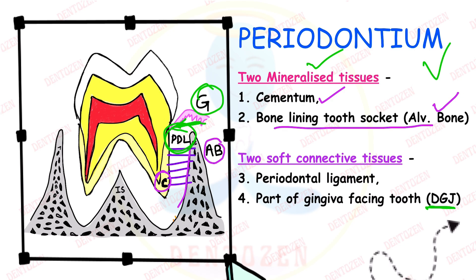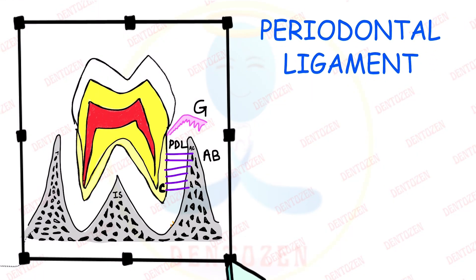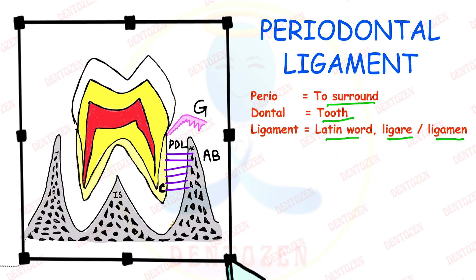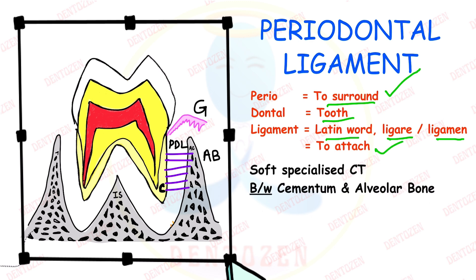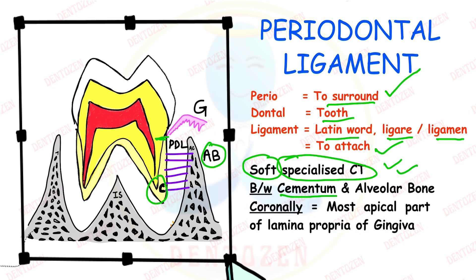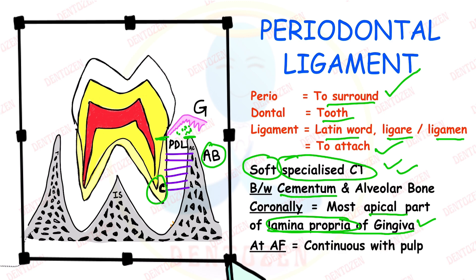Periodontal ligament: peri means to surround, dontal is tooth, and ligament comes from the Latin word ligare, meaning to attach. It is a soft, specialized, richly vascular connective tissue present between cementum and alveolar bone. Coronally, it extends to the most apical part of the lamina propria of the gingiva, and at the apical foramen it becomes continuous with the dental pulp.